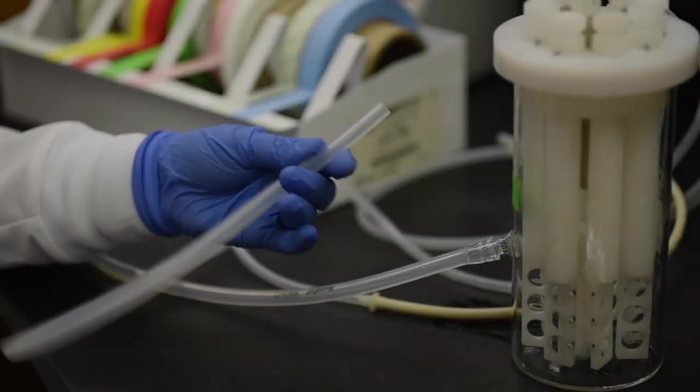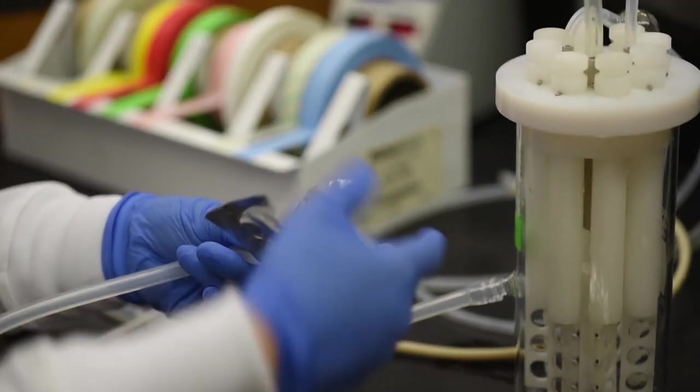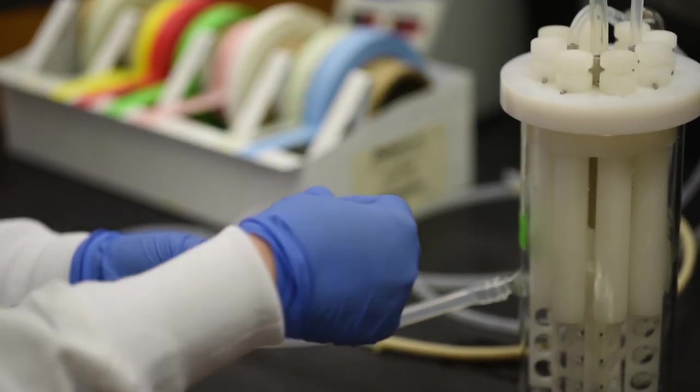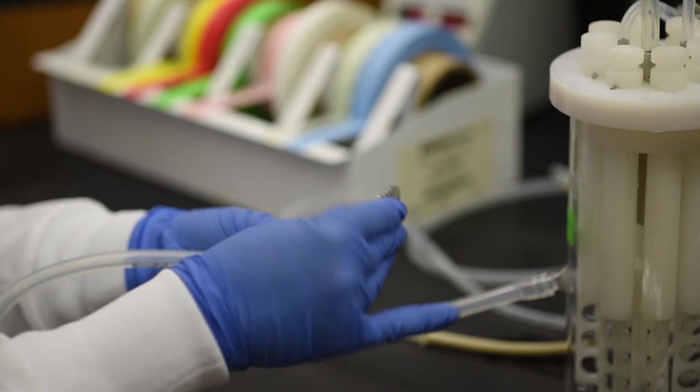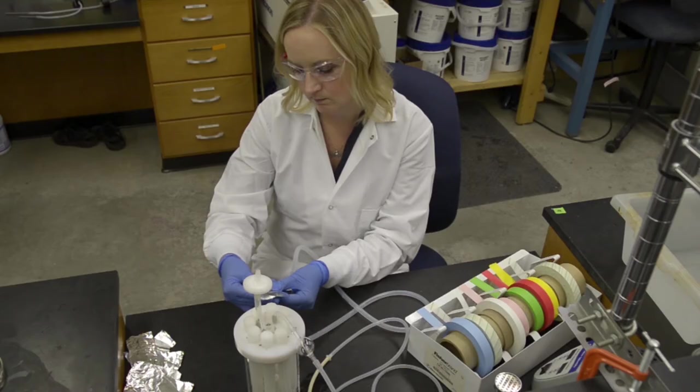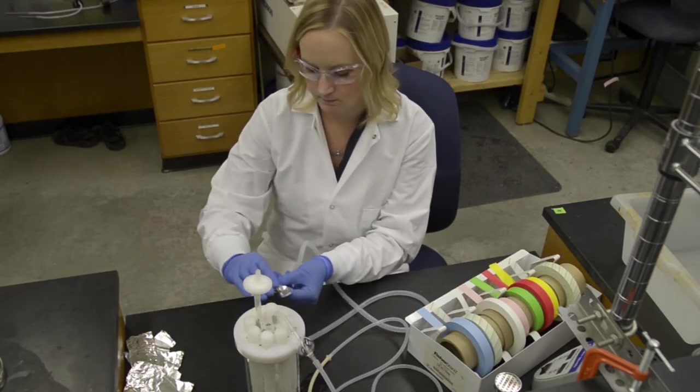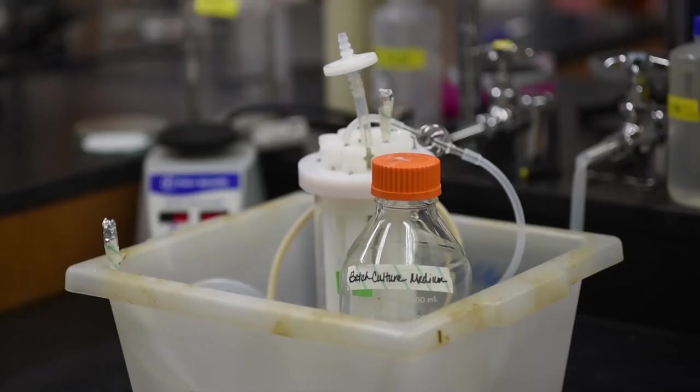To maintain sterility after autoclaving, cover all open ends of tubing with aluminum foil and autoclave tape. Unseat the metal alignment peg on each rod from the lid notches. Place the reactor in an autoclave safe tray and autoclave on liquid cycle for 20 minutes along with 300 mg per liter tryptic soy broth, TSB, batch culture medium in a separate bottle. The CDC reactor and batch culture medium are ready for sterilization.